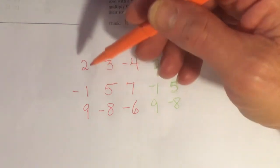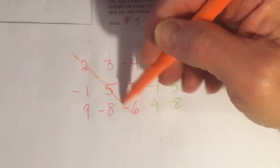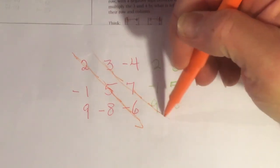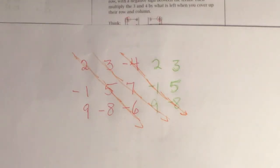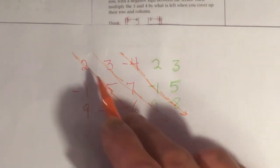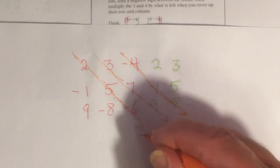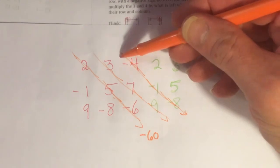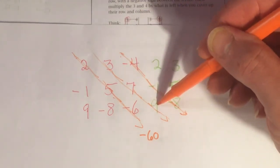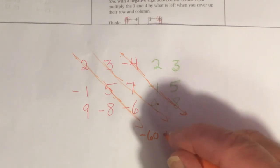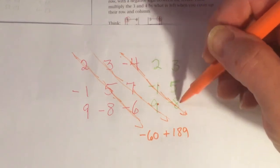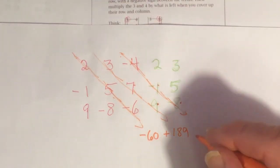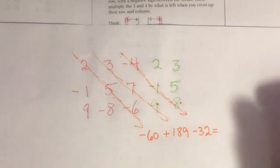We're going to take diagonals down this way, like this, like this, and like this. And we're going to multiply the numbers together. 2, 5, negative 6, that's negative 60. 3, 7, and 9, if I multiply those together, I get 189. And negative 4, negative 1, negative 8, I wind up with negative 32. And if I add those together, I get 97.